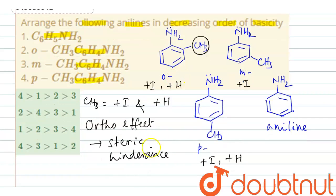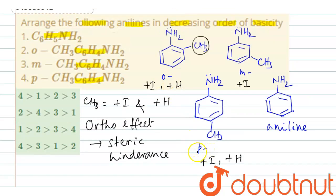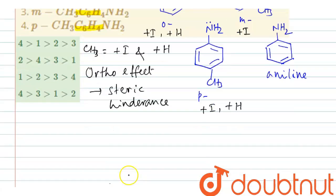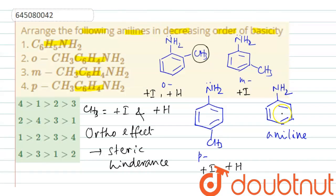Orthotoluidine becomes least basic due to the ortho effect and paratoluidine becomes most basic because plus I and plus H effects, both these effects increase the basicity. Therefore we will have paratoluidine the most basic. Paratoluidine the most basic. Then, orthotoluidine is the least basic. Orthotoluidine is the least basic one. Then, in between these two, we have this one, meta and aniline.